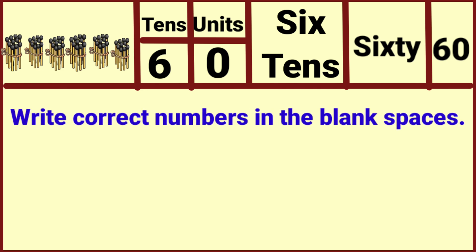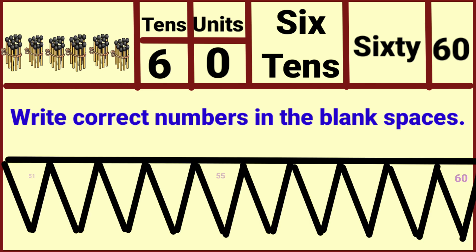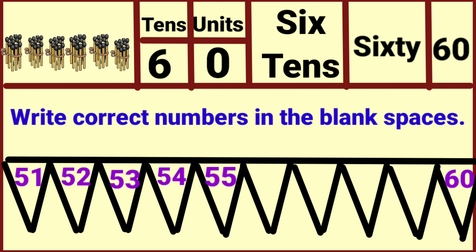Write the correct numbers in the blank spaces. Fifty-one and fifty-five and sixty are already given. Let's complete it: 51, 52, 53, 54, 55, 56, 57, 58, 59, 60.